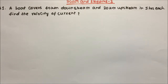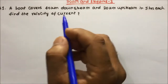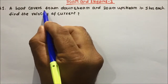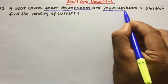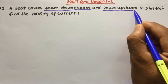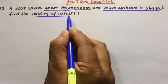Hi friends, our today's topic is Boats and Streams, and this is the third video in Boats and Streams. Here we are going to discuss a few very important questions which frequently come in our exams. The question given is: a boat covers 40 km downstream and 20 km upstream in 5 hours each — find the velocity of the current.